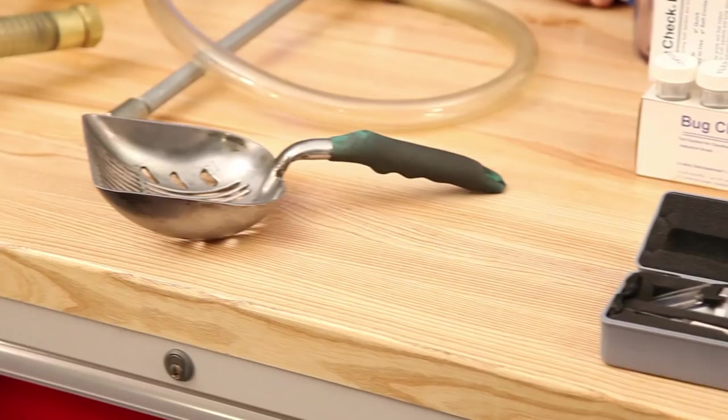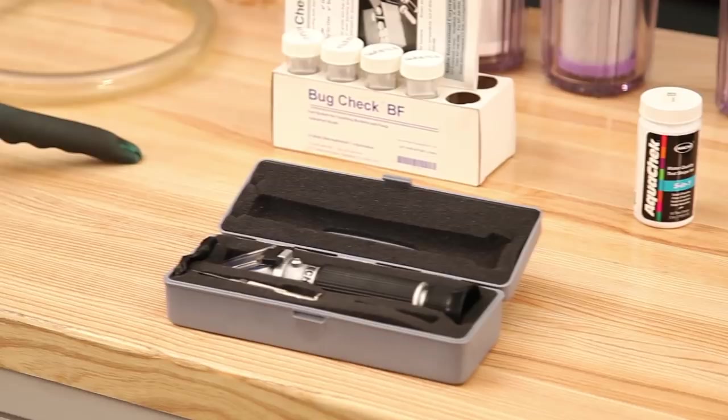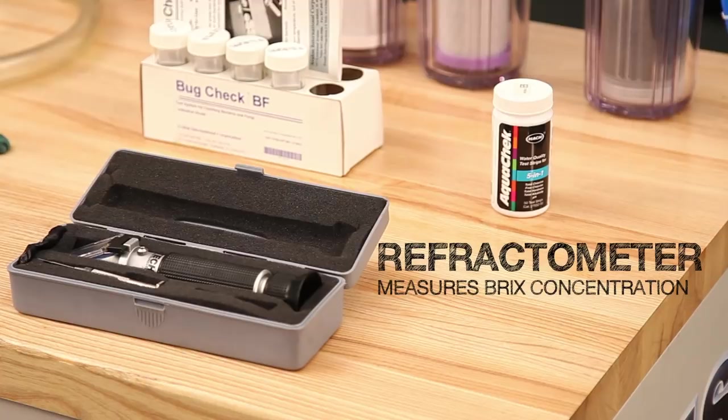We'll start off with the refractometer. This is the most important tool you'll use for keeping your coolant working correctly. Its purpose is to measure the concentration of your coolant. They are handy when filling an empty tank with a new batch to verify the concentration.